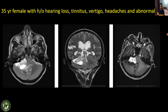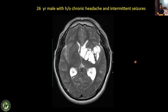Next: a 35-year female with hearing loss, tinnitus, vertigo, headache, and abnormal gait. There is a solid-cystic lesion in the CP angle which is heterogeneously hyperintense on T2, showing no enhancement in the cystic component but heterogeneous enhancement in the solid component. This is a classical case of CP angle acoustic schwannoma.